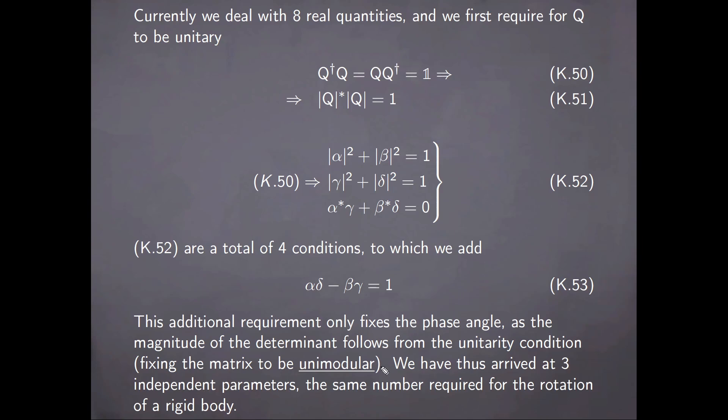Therefore, we have a total of five conditions, so we have arrived at three independent parameters, the same number required for the rotation of a rigid body.